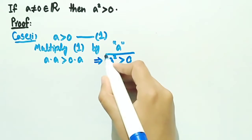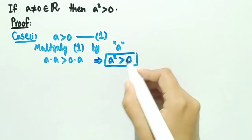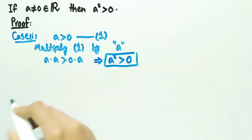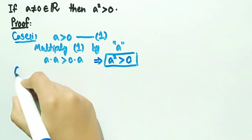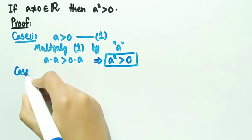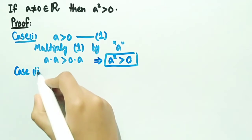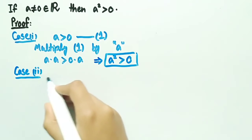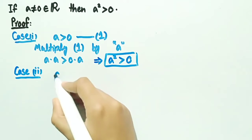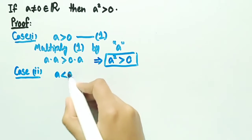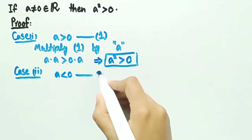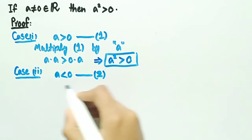So in case 1, a square is greater than zero for any positive real number a. Now we will discuss case 2. In case 2, we consider a less than zero, that is a is a negative real number. Let it be named as equation number 2.